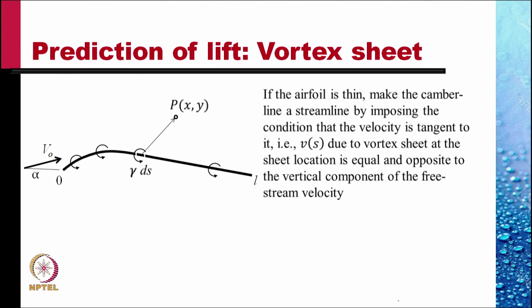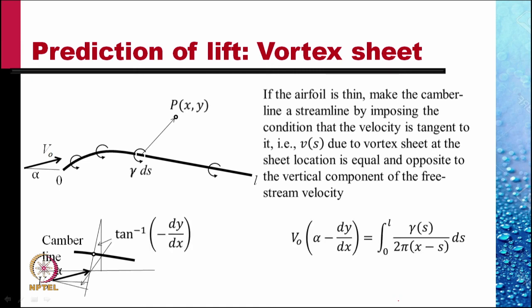If the aerofoil is thin, make the camber line streamline by imposing the condition that the velocity is tangent to it. That is, v s due to vortex sheet at the sheet location is equal and opposite to the vertical component of the free stream velocity. So that v naught times (alpha plus dy by dx) is the vertical velocity predicted by this vortex sheet.